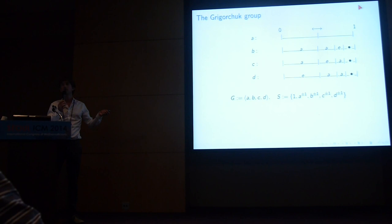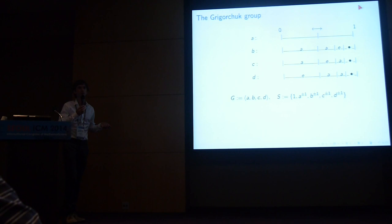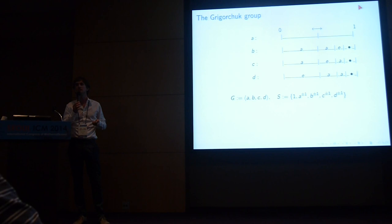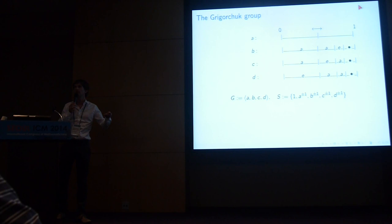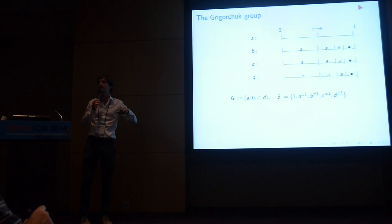Every generator has order two. The subgroup that fixes the left half and the right half is an index-two subgroup, and it is actually isomorphic to the group itself — so it is a self-similar group, and hence infinite. It is an undergraduate exercise to show that every element has order a power of two, so it is a torsion group. As far as I know, this is the simplest example of an infinite torsion group. This group cannot be linear, because Schur's classical theorem from the early 1900s says a finitely generated linear group cannot be infinite torsion.